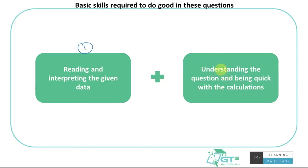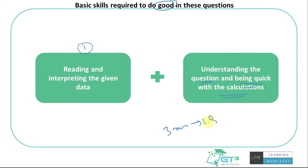Once you can read the information, the next important skill is understanding the question being asked. Some students struggle to understand what's being asked — they understand the table or graph, but get confused about what to do with the question because of how the sentence is framed. Most importantly, once you figure that out, you have to be very quick with calculations. The faster you are, the quicker you'll get the answer. Taking three minutes per question may not be sufficient depending on which exam you're targeting.